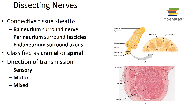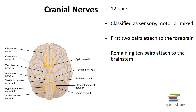Nerves can be classified as either cranial or spinal, and based on their direction of transmission they are sensory (afferent), motor (efferent), or mixed. Cranial nerves contain sensory neurons only, motor neurons only, or both if mixed.